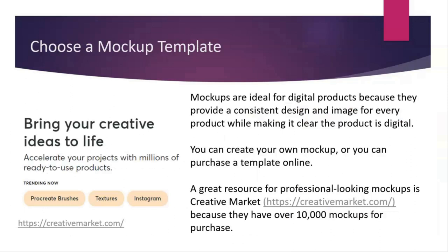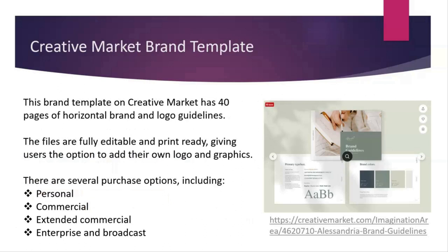Then you'll need to choose a mock-up template. Mock-ups are really great for digital products because they provide a consistent design, and they allow people to see your product in their own space. You can create your own mock-up, or you can purchase a template online. Creative Market is a great resource — they have thousands of mock-ups. Canva has a lot of free mock-ups now. Rob Pixel has some really good mock-ups. Here's an example of a brand template on Creative Market with three different pages of horizontal brand and logo guidelines, all fully editable, so you can purchase this and have all the brand assets and mock-ups that you can use.